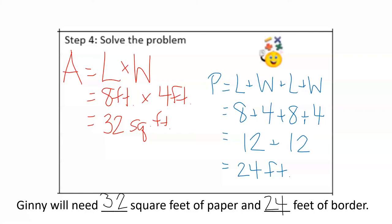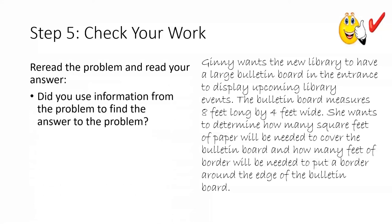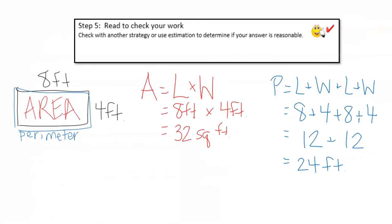Our final step is to check our work. We can reread the problem and our answer to make sure that we used information from the problem to solve, that our answer makes sense, and that we answered all parts of the problem. The problem included two parts, and I answered both by finding the area and perimeter of the bulletin board. I can use estimation to check the reasonableness of my answer.